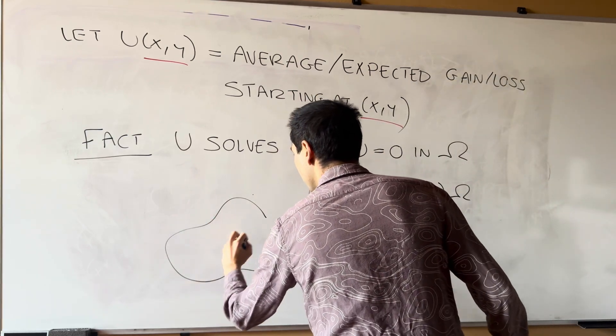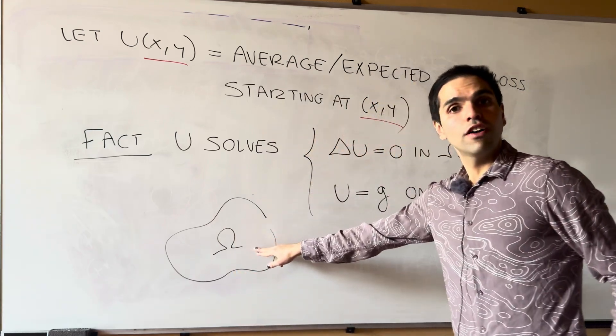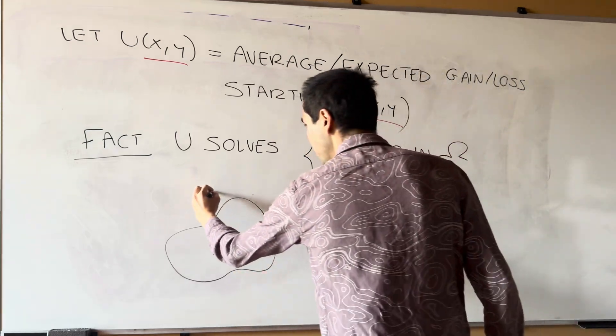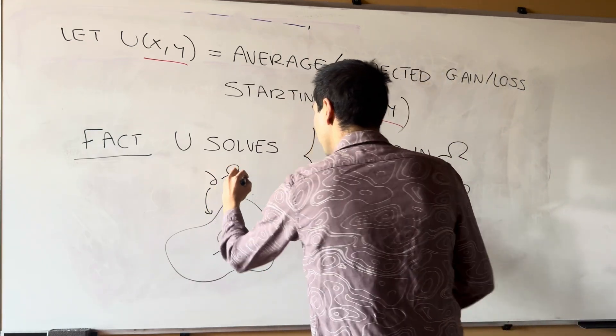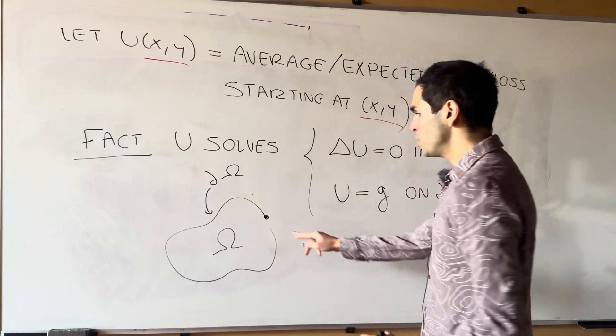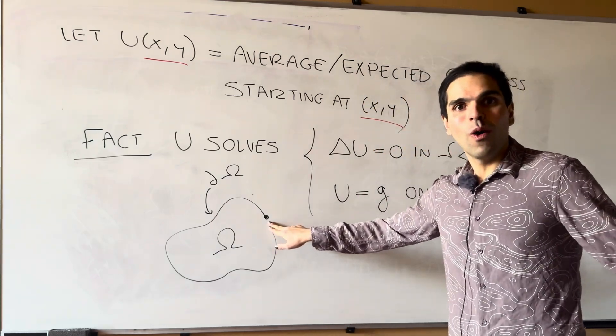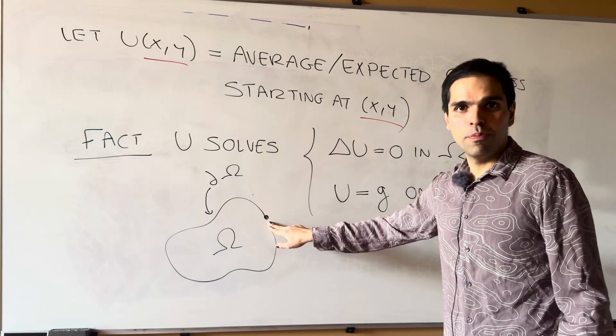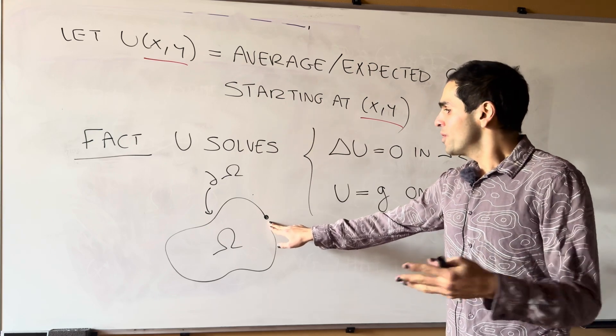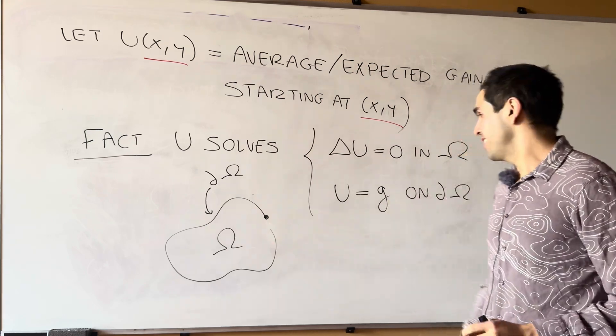So once again, in your region, you have Laplace's equation. On the boundary, u is just g. And that's because if you start at the wall and you hit it, you immediately have to pay the price g. There's nothing random in that case anymore.